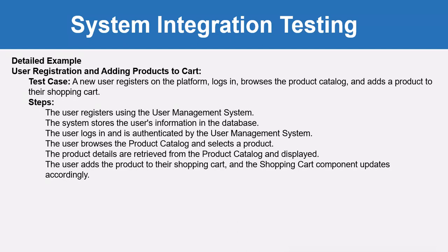The user browses the product catalog and selects a product. The product details are retrieved from the product catalog and displayed. The user adds the product to their shopping cart, and the shopping cart component updates accordingly.